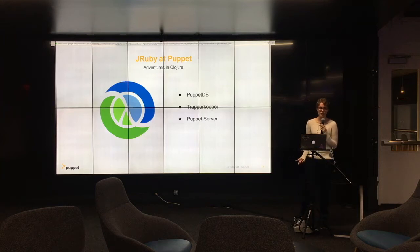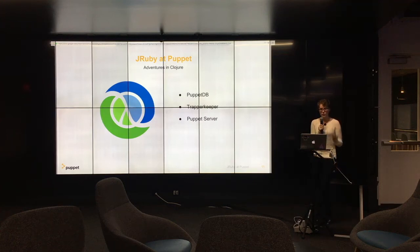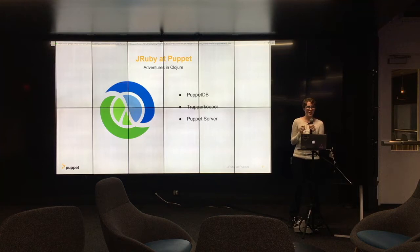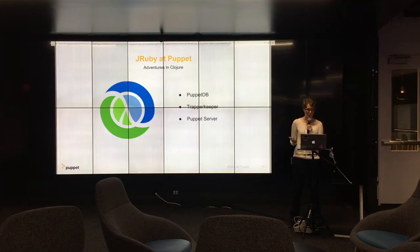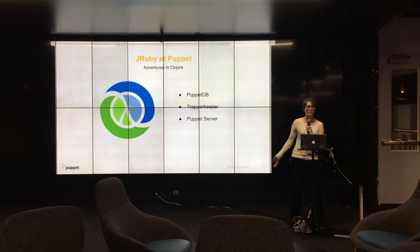They built this server framework called Trapper Keeper in Clojure and decided to re-architect the Puppet master to use it. At the time, we were starting to sign larger customers with bigger needs — more servers to manage — and they were having major problems with the performance of our old Ruby code base. When we first introduced Puppet server, we saw a performance increase of two to three times better. But we still had all the core business logic of Puppet in Ruby — tens of thousands of lines — so we couldn't wholesale abandon the Ruby code base. So we started looking into JRuby.